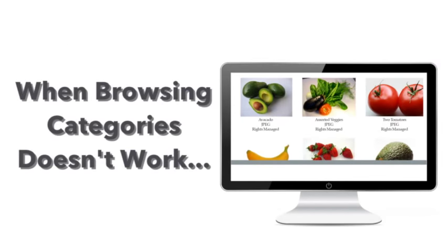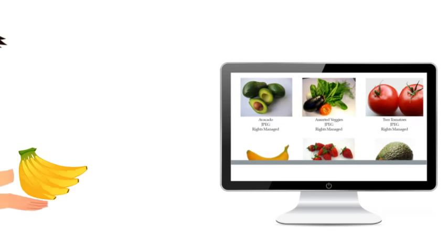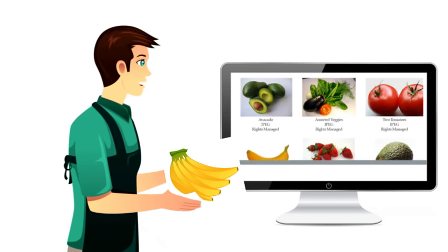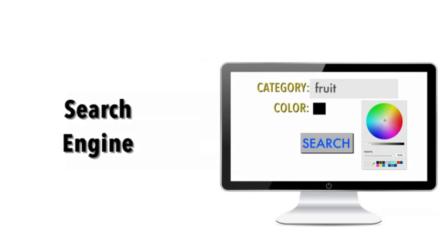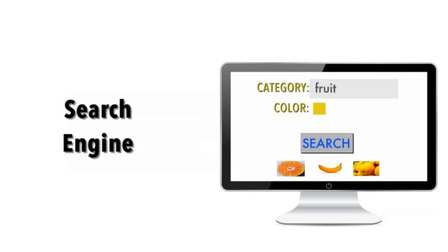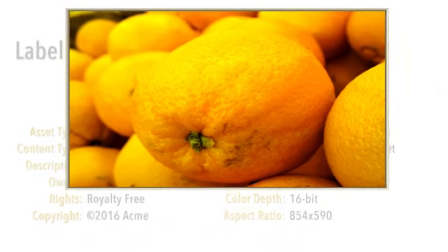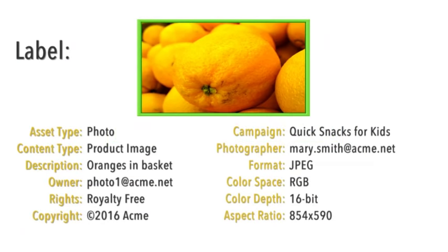If a user can't find something after browsing, they need a way — and this time typically a search engine — that knows where everything is. Each individual asset has a label that gives all of the information that a user needs to understand what the asset is. This label in DAM is called metadata.